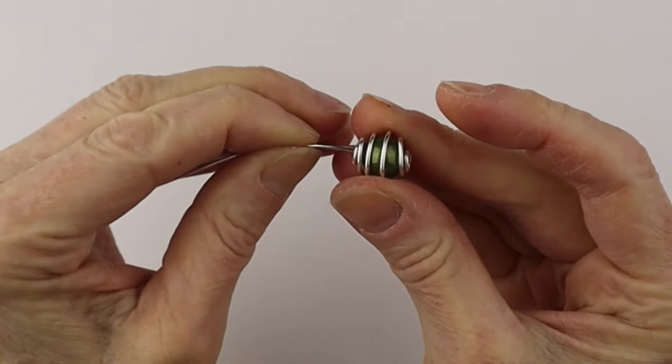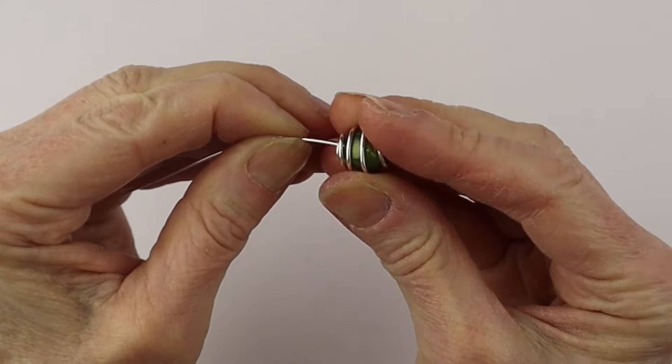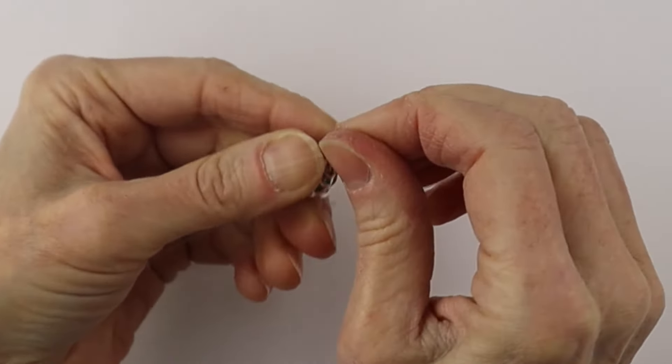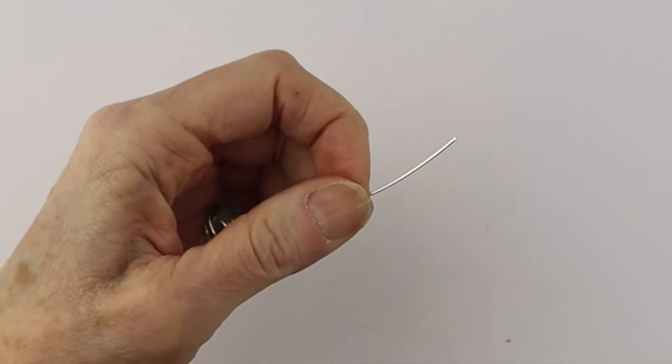Now we're going to find the hole of the bead and pop it through. Make sure your wire is going through the little loops and those loops are closed so it doesn't slip out.